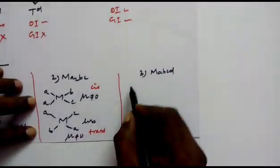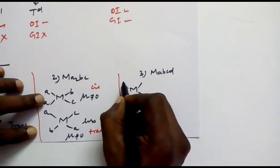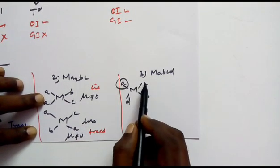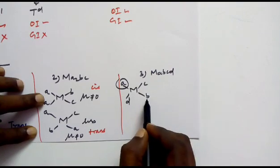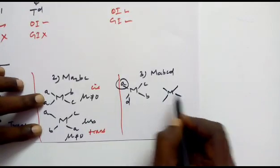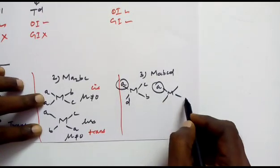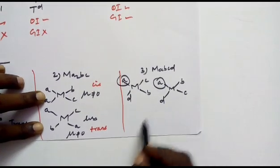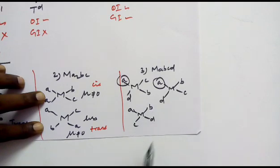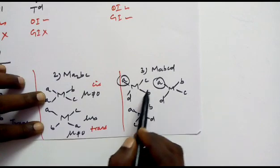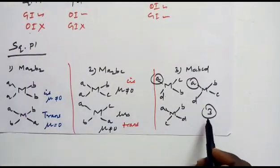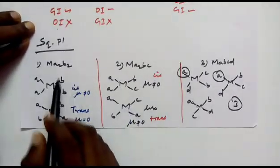For MABCD type, we fix A and bring all the other ligands opposite to A in turn. First: A opposite to B; second: A opposite to C; third: A opposite to D. In that way, we get three isomers. So in this type we get three geometrical isomers, while in MA₂B₂ and MA₂BC we get two geometrical isomers each.